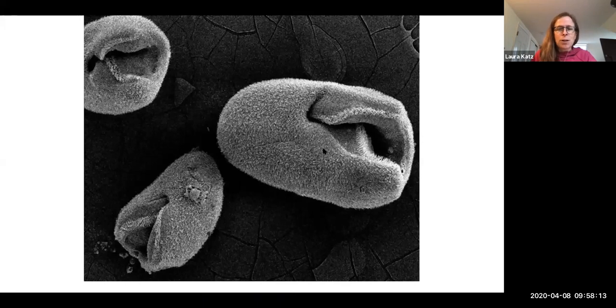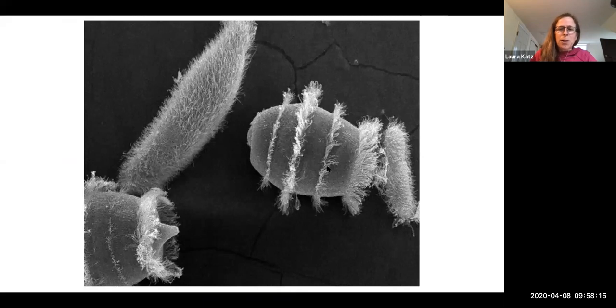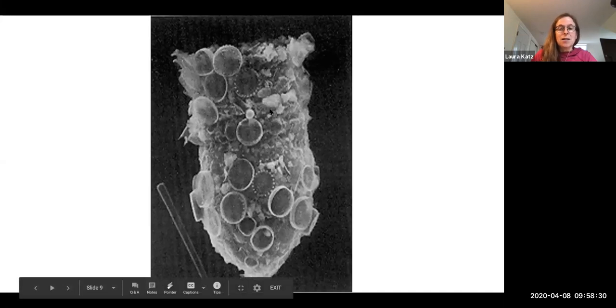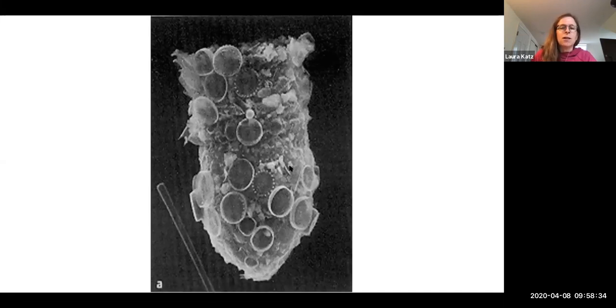This is a beautiful ciliate, didinium eating paramecium here, so ciliates can be voracious predators. In fact, one of the fundamental ecological experiments came out of using these guys in a predator-prey relationship. Some ciliates build shells, so this is a lorica or a test of a ciliate, and it has diatoms that it's glued. It's an agglutinator. It's glued diatoms to its outside of its shell.